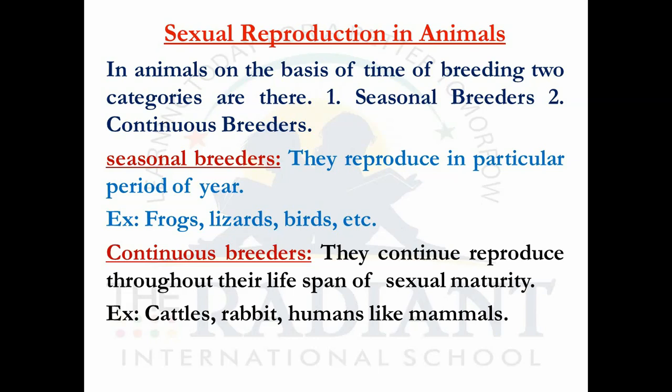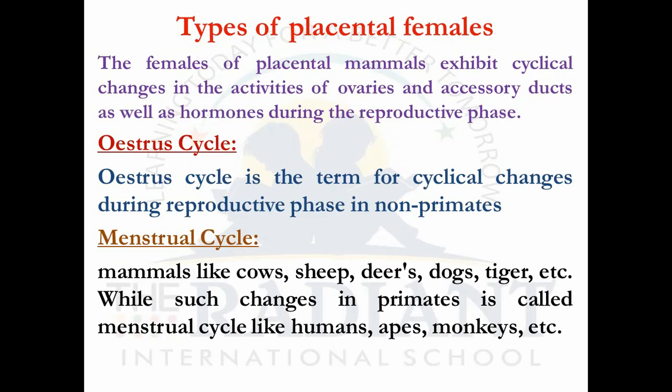In continuous breeders, there is no particular season — they can reproduce at any time throughout the year. Examples include cattle, rabbits, humans, and all mammals. All mammals are continuous breeders.